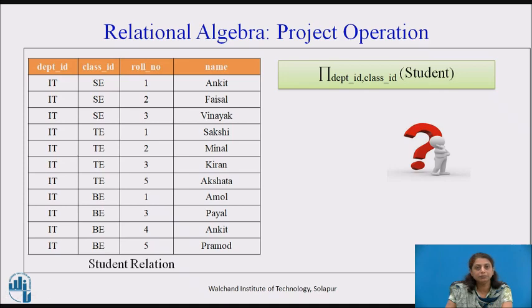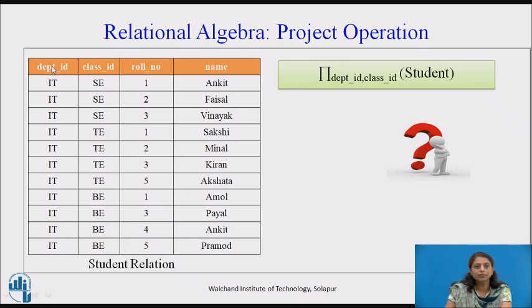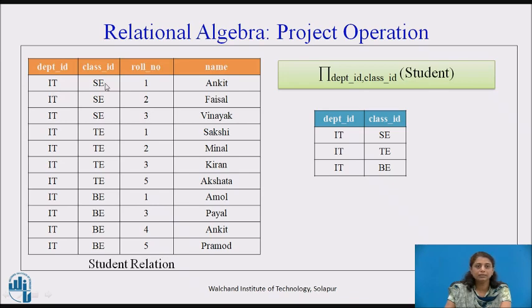Now consider the second example: project department ID and class ID from student. Pause the video and try to write the output relation. Here we want to select two attributes — department ID and class ID. Though there are three records with IT and SE class, we get only a single record due to duplicate removal, and overall we get three distinct records in the result.